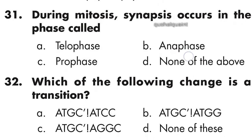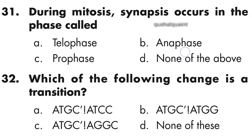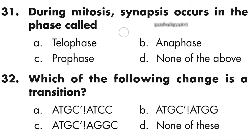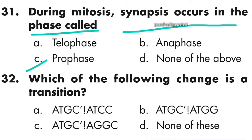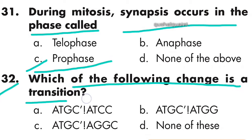Question 31: During mitosis, synapsis occurs in the phase called prophase — option C is correct. Question 32: Which of the following change is a transition? The answer is none of these — option D is correct.